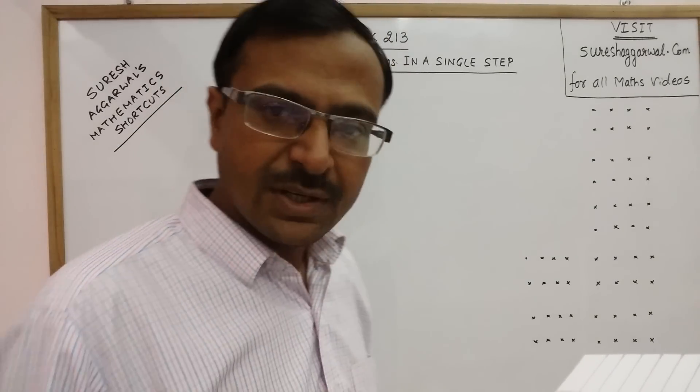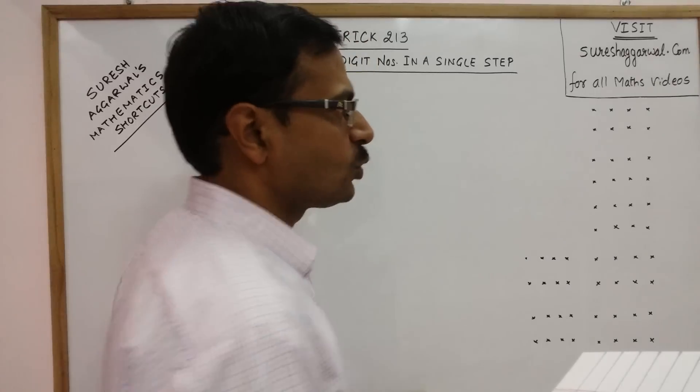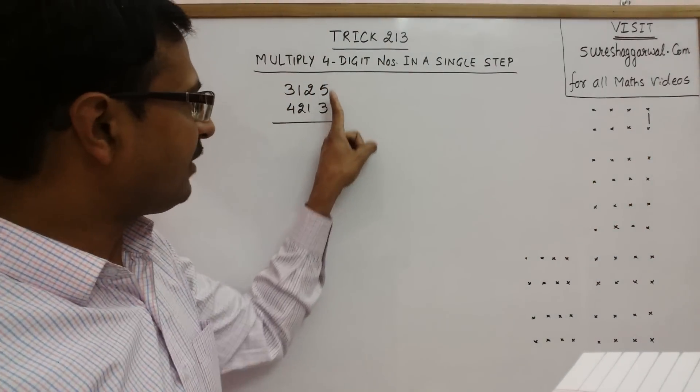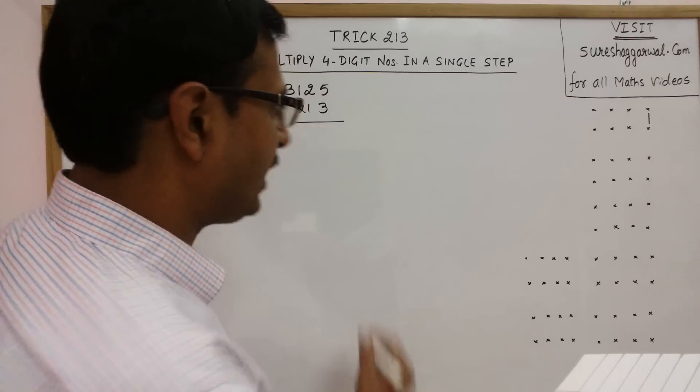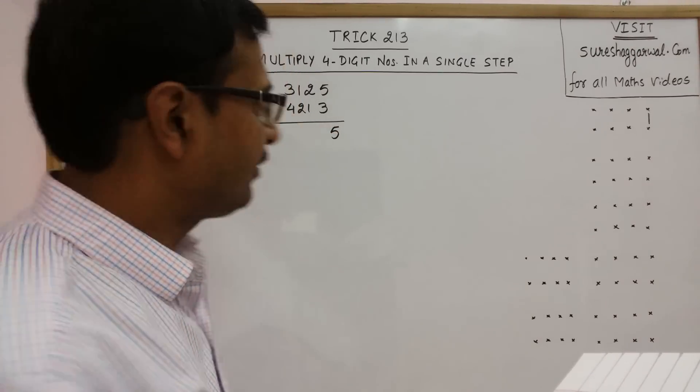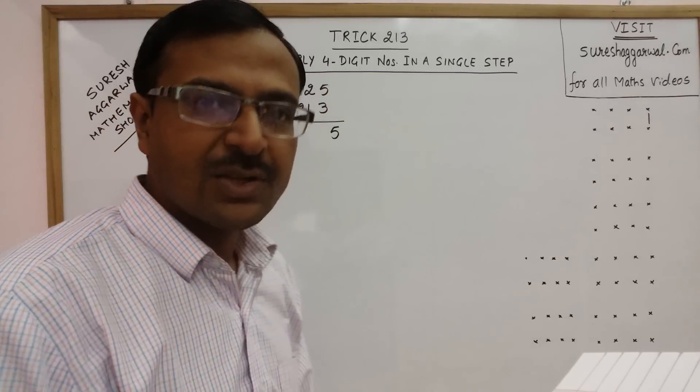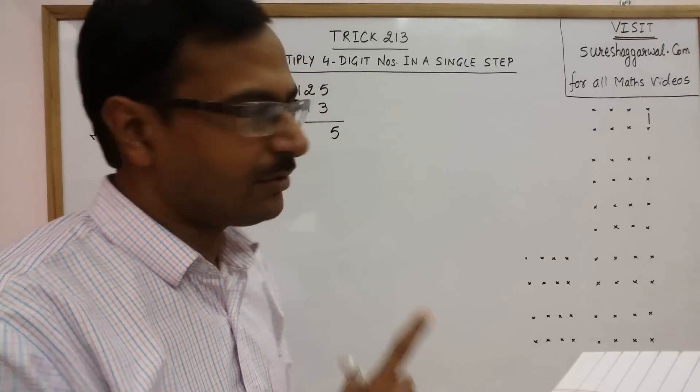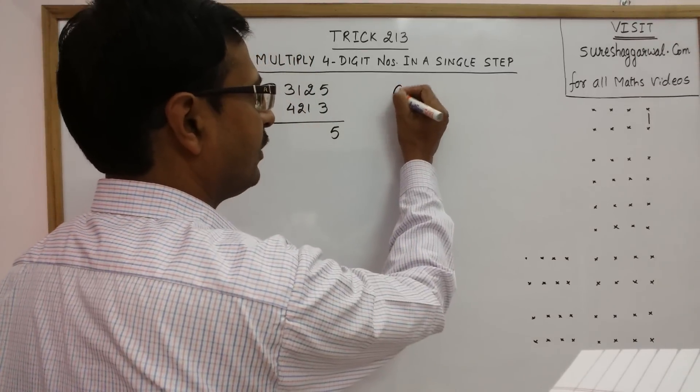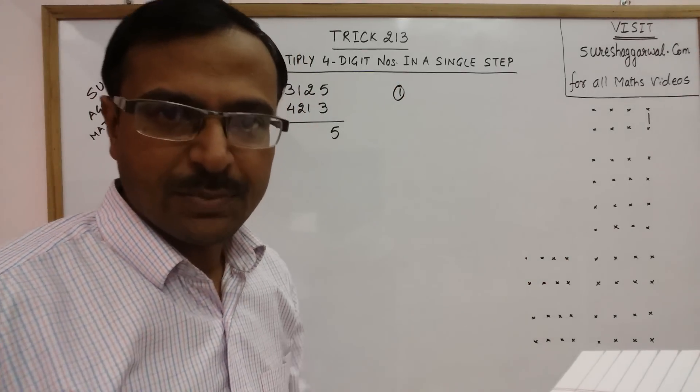The first calculation is to multiply the digits in the units place. Here we have 5 and 3, so 5 times 3 is 15. We retain the unit digit 5 and remember that 1 is carried forward. Now, the second step.